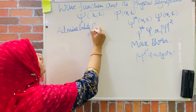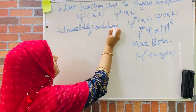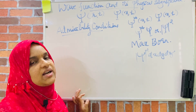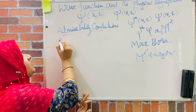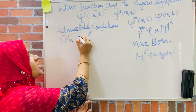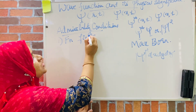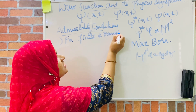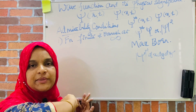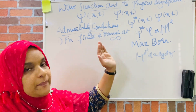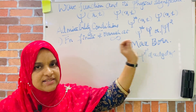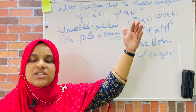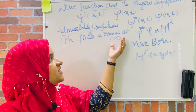Admissibility conditions for a function to be acceptable as wave function: we cannot take any mathematical function as wave function, but it should obey certain conditions. The first condition is that the function should be finite and single valued. It should be finite and should vanish at infinity. Because wave function represents the state of a system — if the particle is absent at infinity, then the wave function should be equal to zero at infinity, and if the particle is present in a particular region, the wave function should have a finite value there.